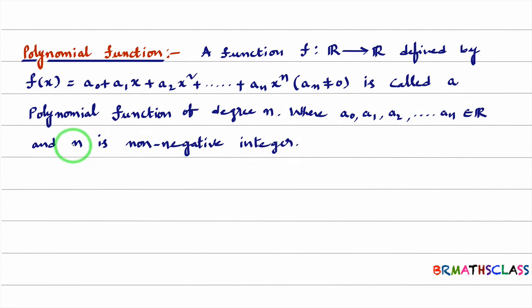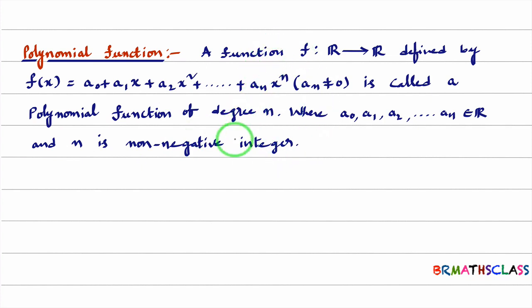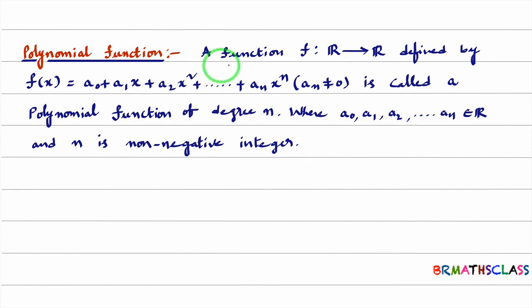What is n? n is a non-negative integer. This is the definition of polynomial function. In an examination, if they ask you to define a polynomial function, you should write it like this.